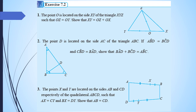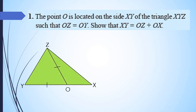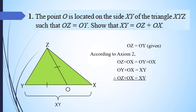Let's do the first question of exercise 7.2 using axiom number 2. Point O is located on side XY of triangle XYZ such that OZ equals OY. Show that XY equals OZ plus OX. Since OZ equals OY, by axiom number 2, OZ plus OX equals OY plus OX. Since OY plus OX equals XY, we can write OZ plus OX equals XY.